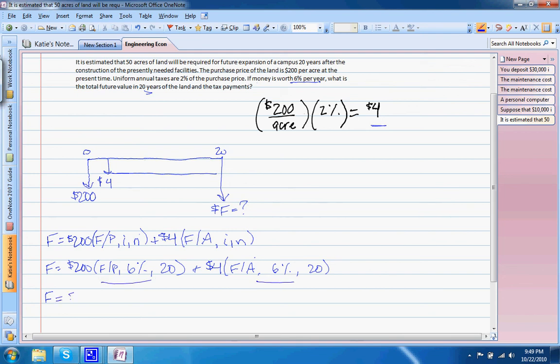So we'll have $200 times 3.207 plus $4 times 36.786. And when we solve that, we get $788 per acre as our total future value in 20 years of the land and tax payments.